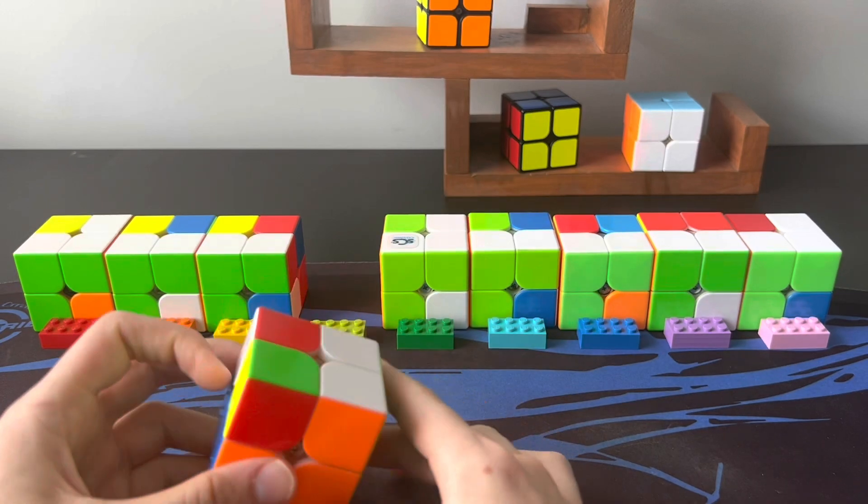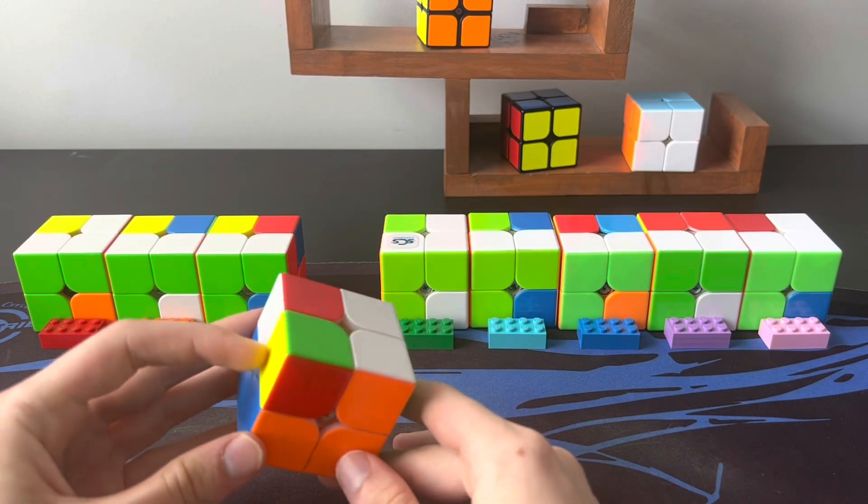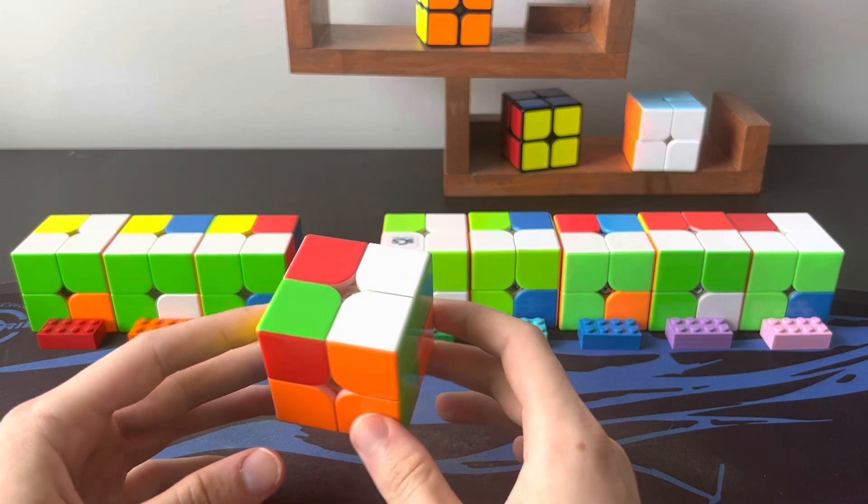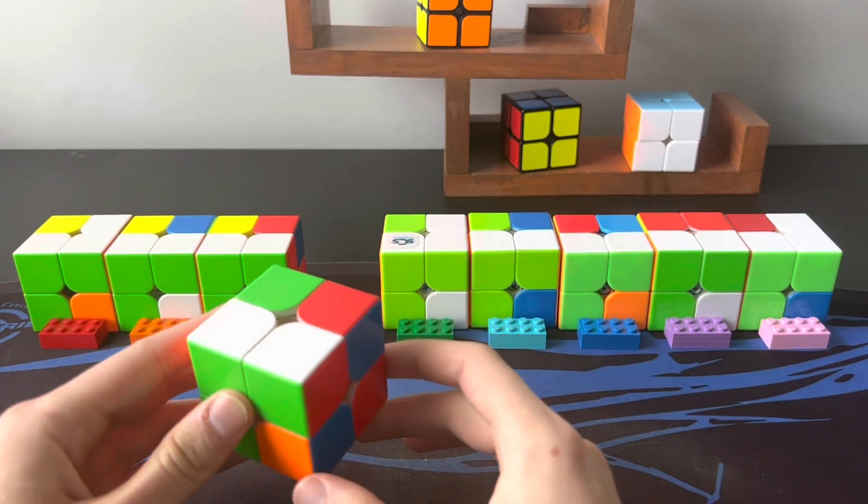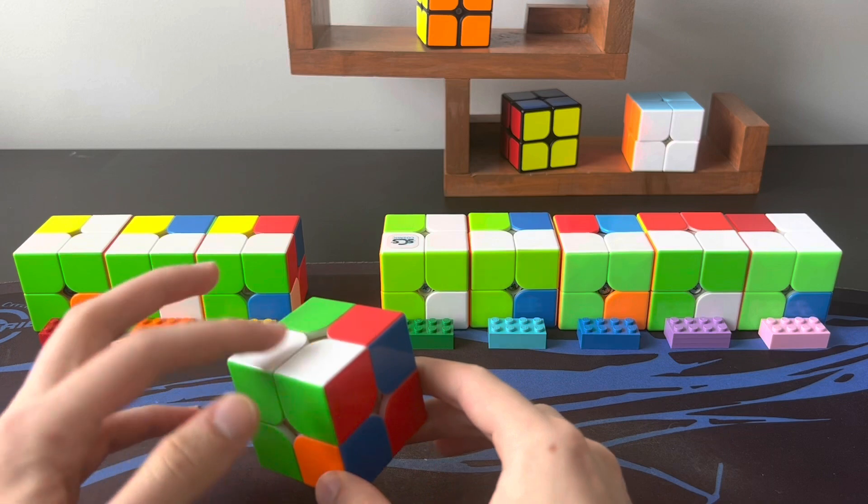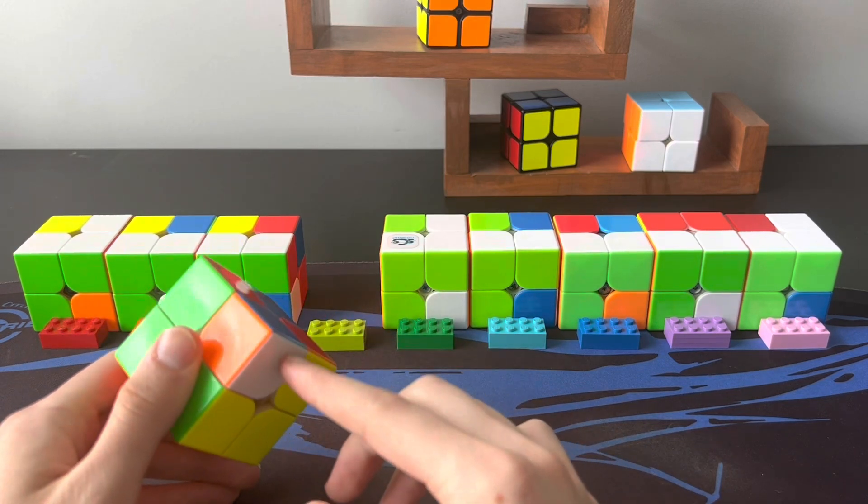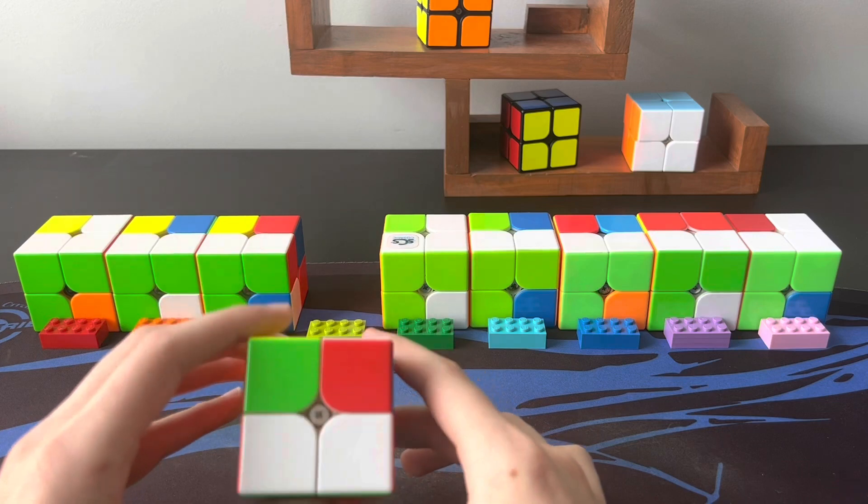If we look on the top now, and imagine that this was a white sticker instead of yellow, this looks exactly like a U case for CLL. So what you can do is recognize this LS case as the CLL it would be if you swapped this white corner with this yellow corner here.